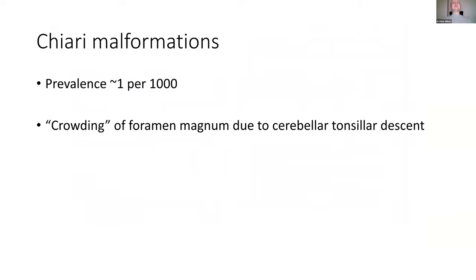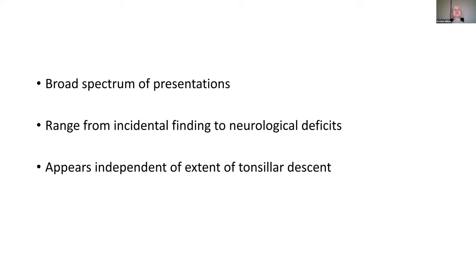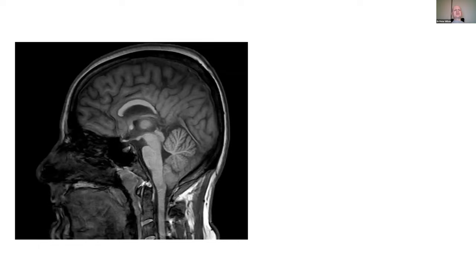Chiari malformations are actually quite common in the community — about one in a thousand people will have one. In simple terms, there's crowding of the foramen magnum where the brainstem leaves the skull to become the spinal cord. The cerebellar tonsils pass down through the foramen magnum and crowd it, preventing normal CSF pulsation. It can have a very broad range of presentations from completely incidental to a range of neurological deficits. Something I've come to appreciate is that while there may be impressive changes on MRI, that doesn't necessarily correlate with the extent of symptoms — as shown in one study.